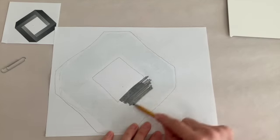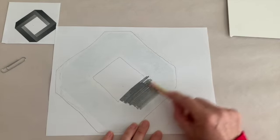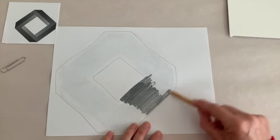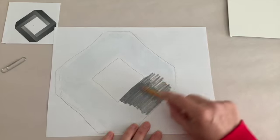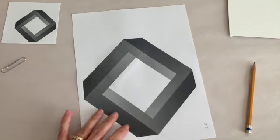You want it to be dark enough that you really can't see the white paper showing through too much. It's going to eat up the lead of your pencil really quickly. You're probably going to need to sharpen it. This does not have to be pretty.